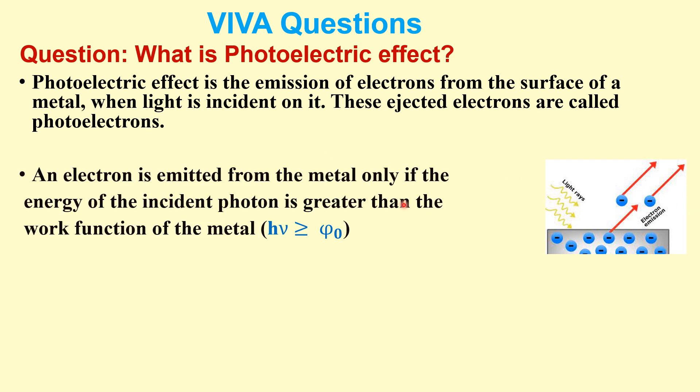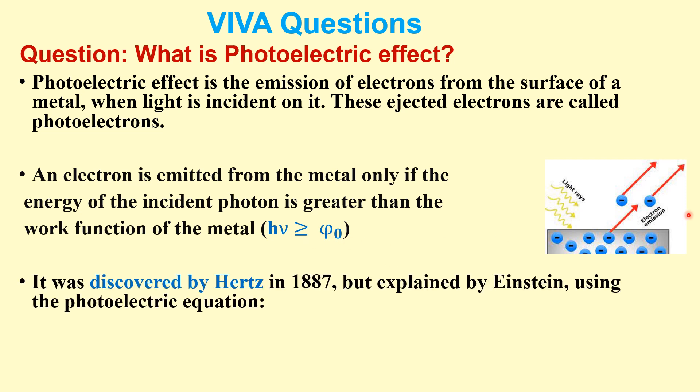An electron is emitted from the metal only if the energy of the incident photon is greater than the work function of the metal. So H nu of the incident radiation should be greater than the work function of the metal, H nu should be greater than phi naught. It was discovered by Hertz in 1887, but this phenomenon was explained by Einstein using the photoelectric equation.